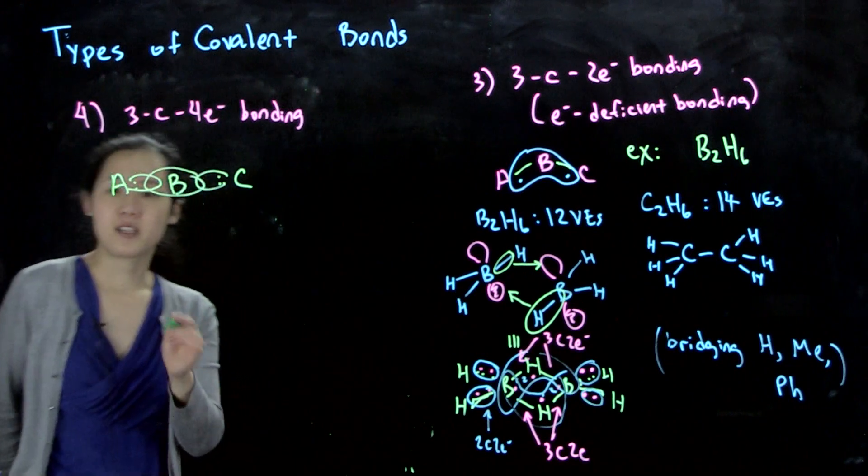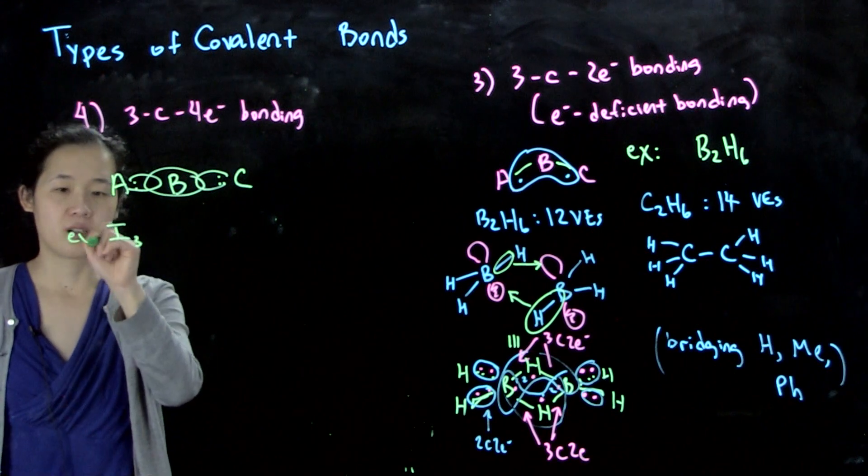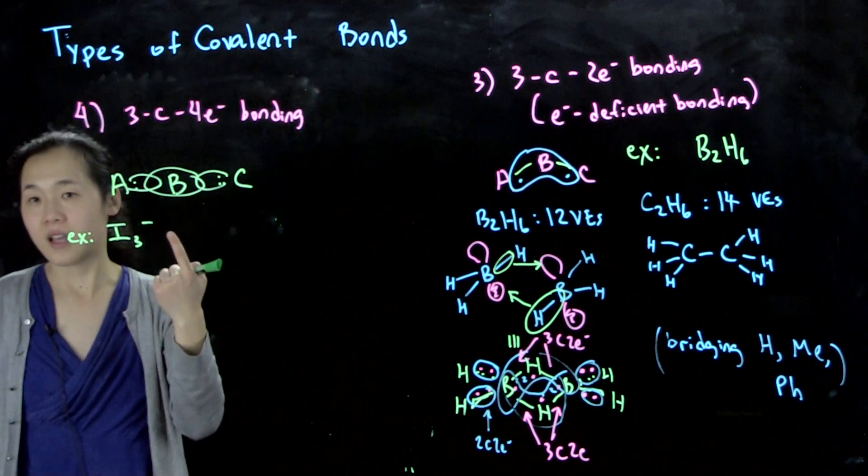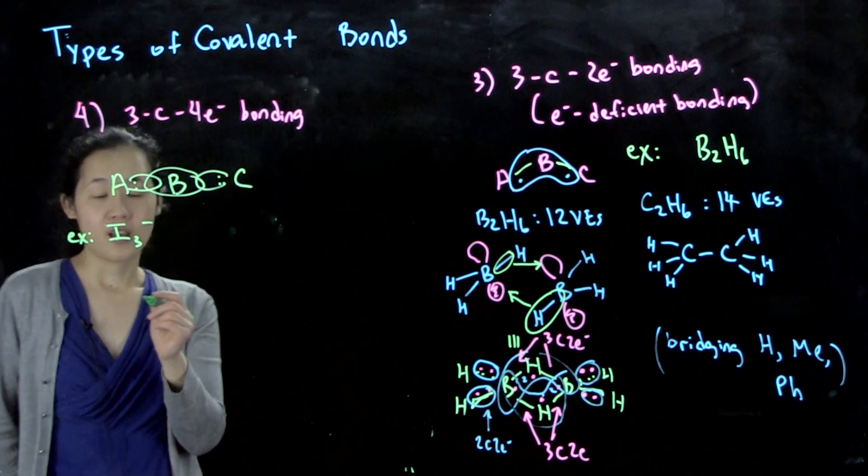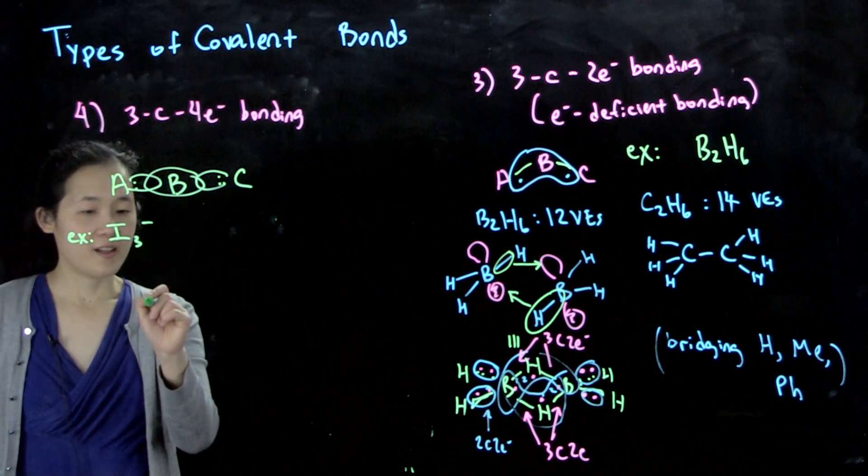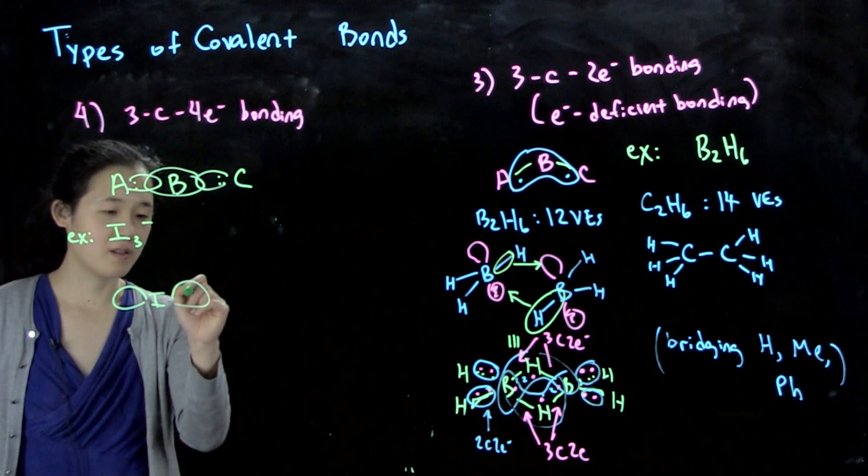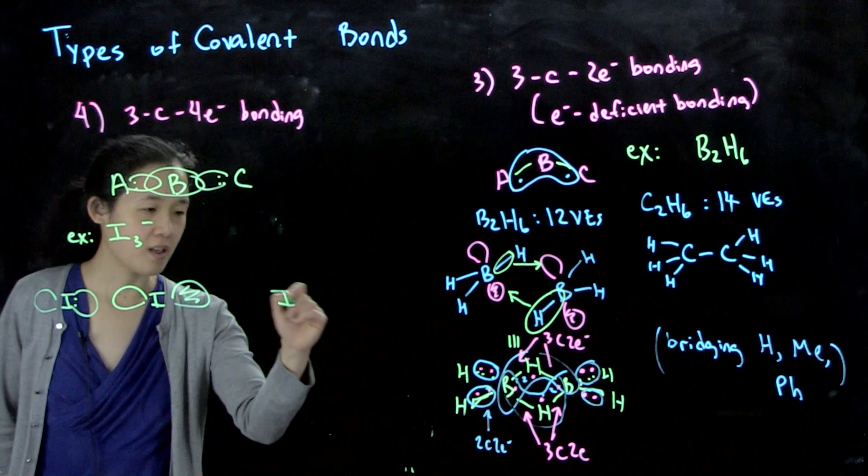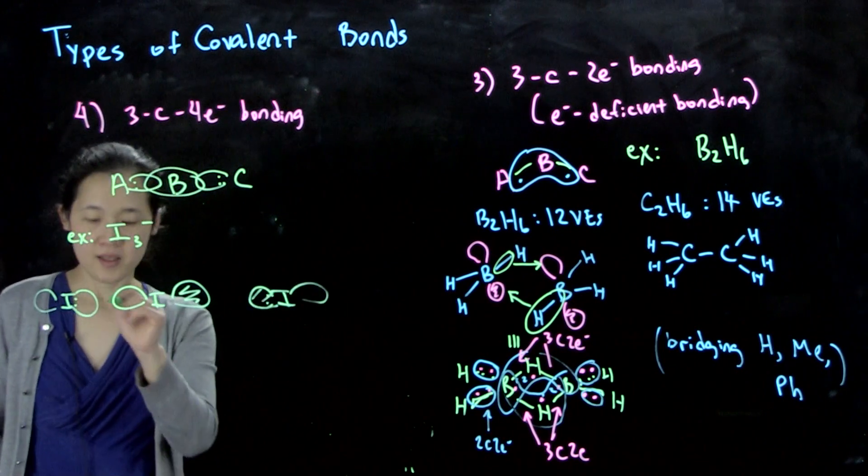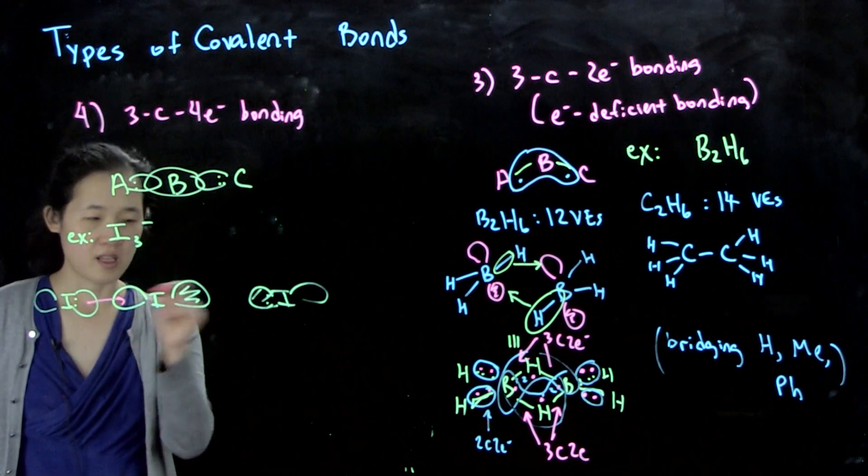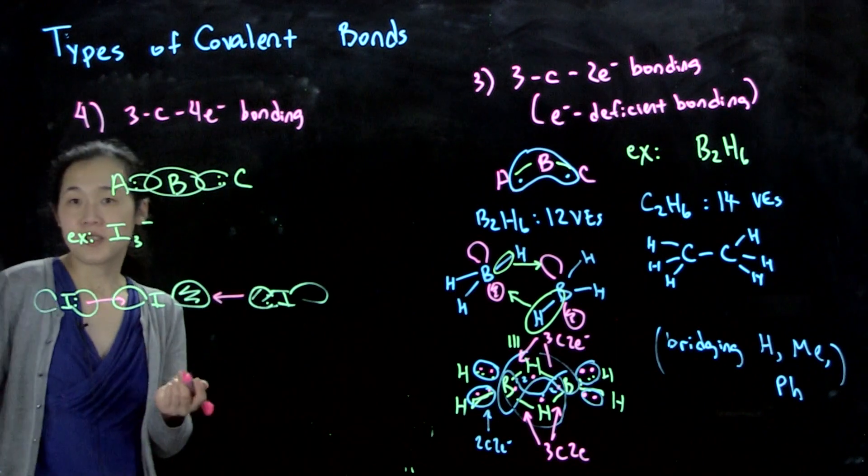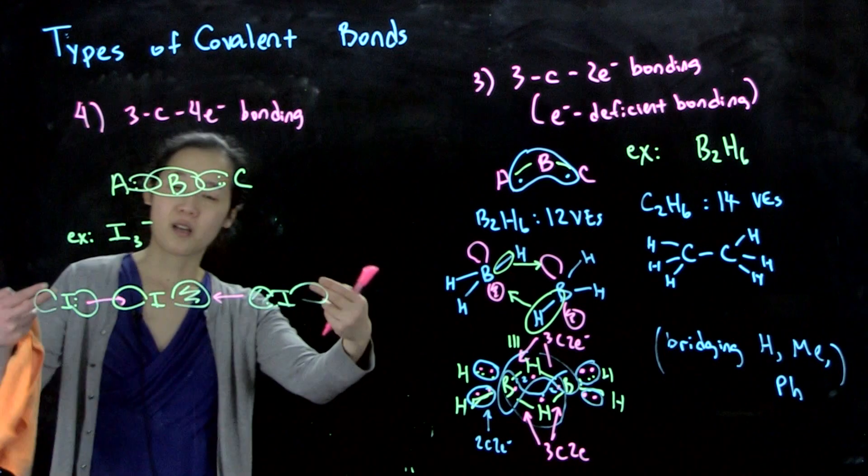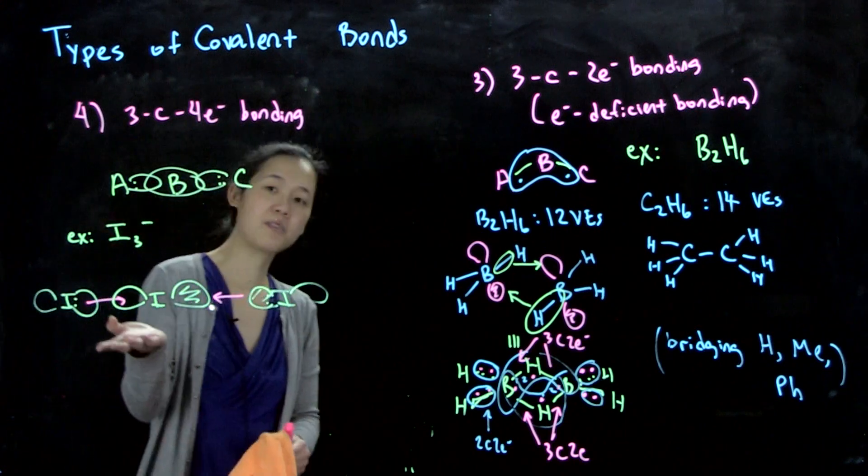You've actually seen one example of this, which is I3-. We talked about how iodide was coming into that anti-bonding sigma star. But you could also think about it as iodine with its P orbital, and iodide here and here, and they both donate this way. This is similar to in your MO diagram, where we end up having a nodal plane down the middle with two electrons coming in this way.